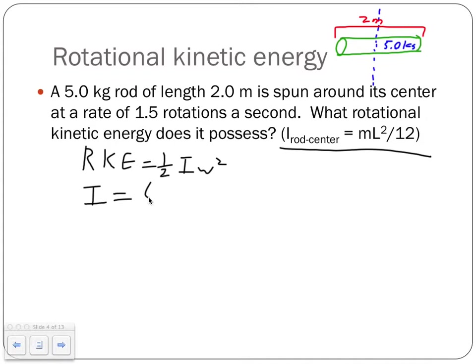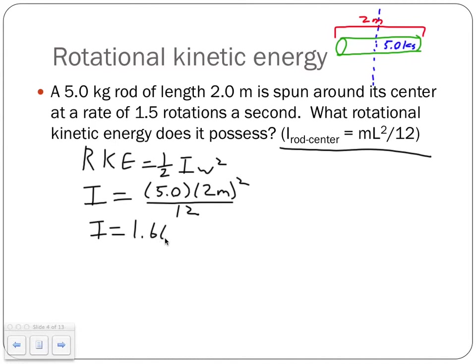Plugging in: mass is 5 kilograms, length is 2 meters, so I = (5 × 2²) / 12. That gives 2 squared = 4, times 5 = 20, divided by 12 = 1.6667. The units of moment of inertia are kilogram meters squared. So I = 1.6667 kg·m².